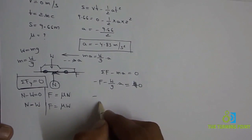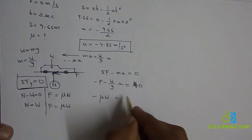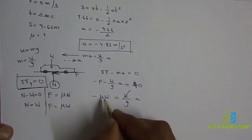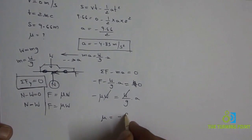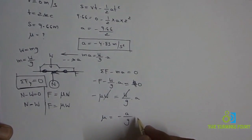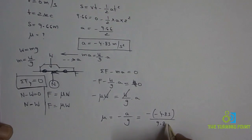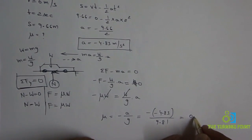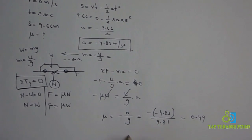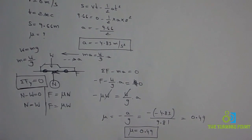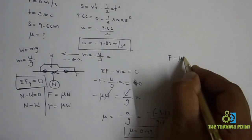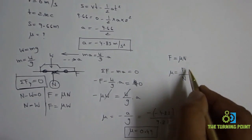Substituting f = μW: −μW − (W/g)a = 0. Moving terms across and canceling W gives μ = −a/g. With a = −4.83 m/s² and g = 9.81 m/s², we get μ = 4.83/9.81 = 0.49. So the coefficient of friction between the tires and pavement is 0.49.